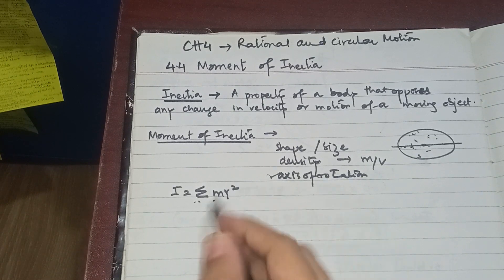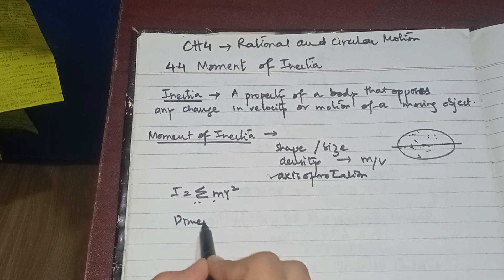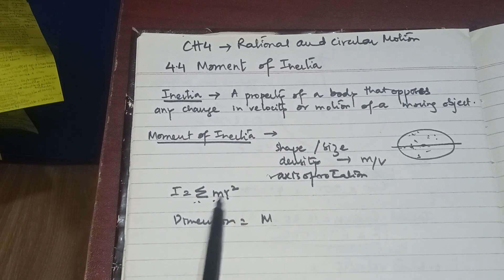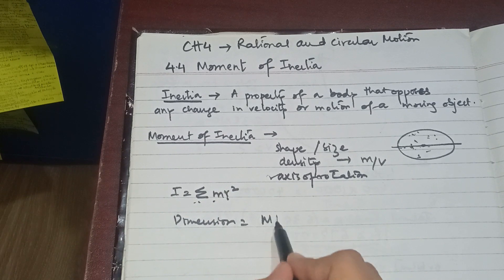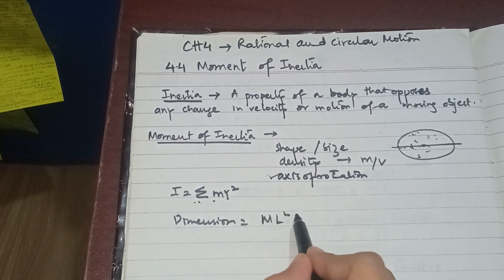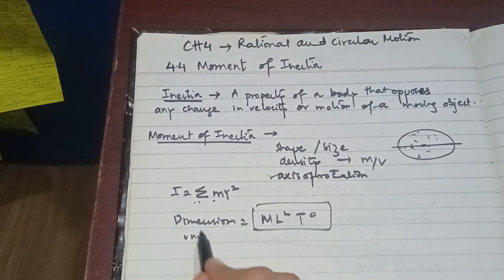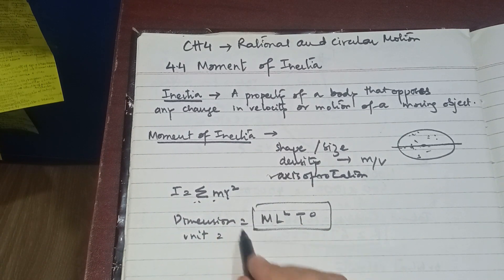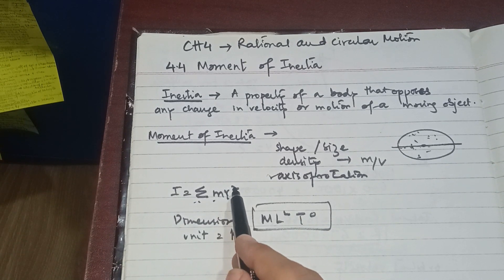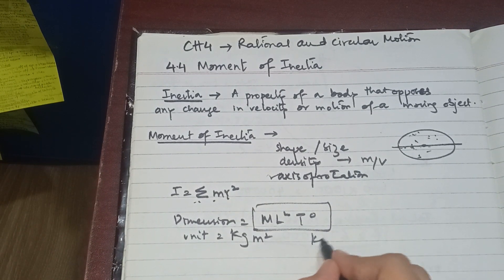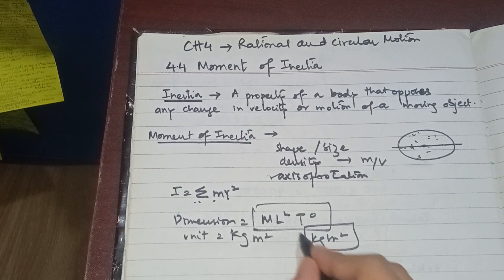Looking at dimensions: mass is represented by M, and r is a length represented by L, so the dimension is ML²T⁰. For the unit, mass is in kg and radius is in meters, so the unit of moment of inertia is kg·m².